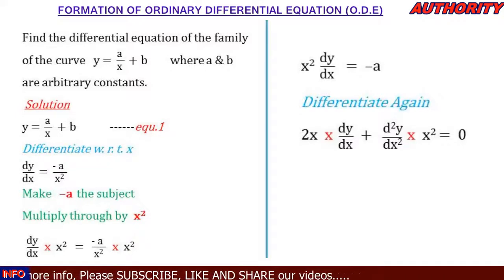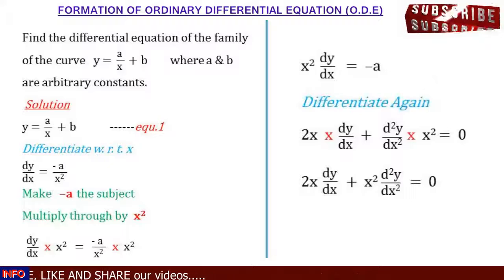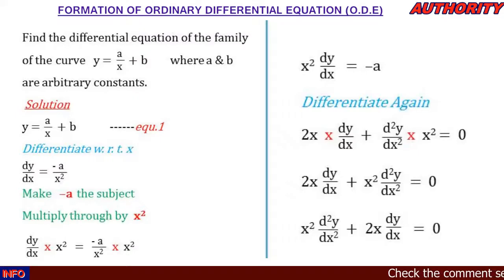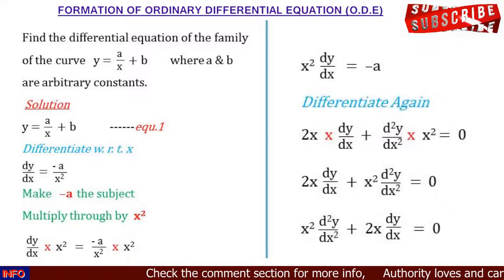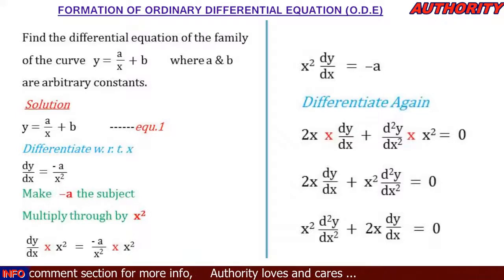Arranging by order and degree, we have 2x dy/dx plus x² d²y/dx² = 0. Rewriting in standard form: x² d²y/dx² + 2x dy/dx = 0. This is the differential equation formed by eliminating the arbitrary constants a and b.